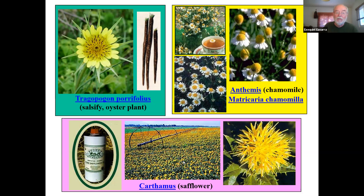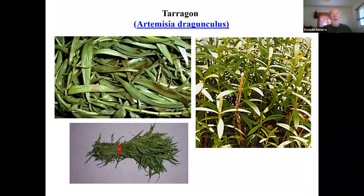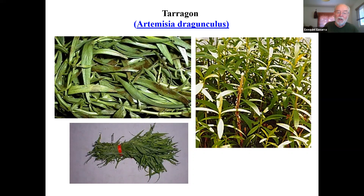Tarragon, Artemisia dracunculus, is cultivated as a culinary herb. We use it fresh and dried in the kitchen to give flavor to a number of dishes. Its sibling species Artemisia tridentata and Artemisia californica are two related species that form major dominant plants in the California coastal scrubs. The one we eat is the European Artemisia dracunculus, which is introduced here — sometimes you'll find it growing spontaneously. A very nice herb to eat.